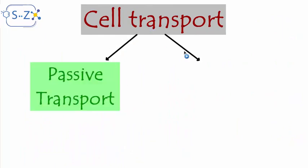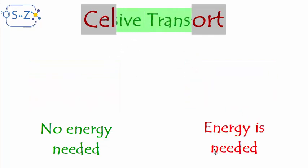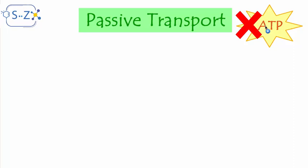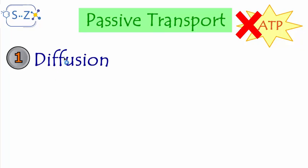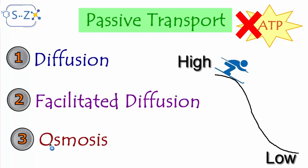Cell transport has two types. The first type is called passive transport, which does not need energy, and the second type is active transport, which does need energy. Passive transport does not require energy in the form of ATP — a chemical molecule that can release a huge amount of energy and is produced inside cells. The types of passive transport are diffusion, facilitated diffusion, and osmosis.